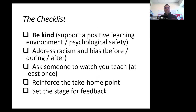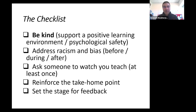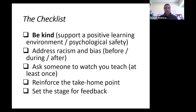Here are the five checklist items that have emerged from my funnel of data and experience. Being kind — supporting a positive learning environment and psychological safety — is probably the one thing you can do that will be most effective for learning. Address racism and bias before, during, and after, and I'll frame that out for you.